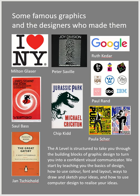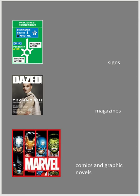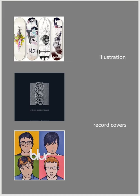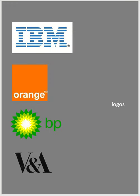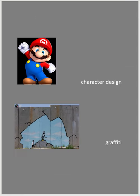Here are some famous graphic designs you'll be familiar with: the I Heart NY from Milton Glaser, which is now so famous we hardly think of it as design; music graphics and book covers; Saul Bass's legendary poster for Vertigo; the Penguin Classics; and the Google logo. Once you start looking, you'll see graphic design everywhere — in road signs, magazines, shops, comics, graphic novels, illustration, record covers, logos, identities, advertising, book jackets, packaging, character design, and graffiti.